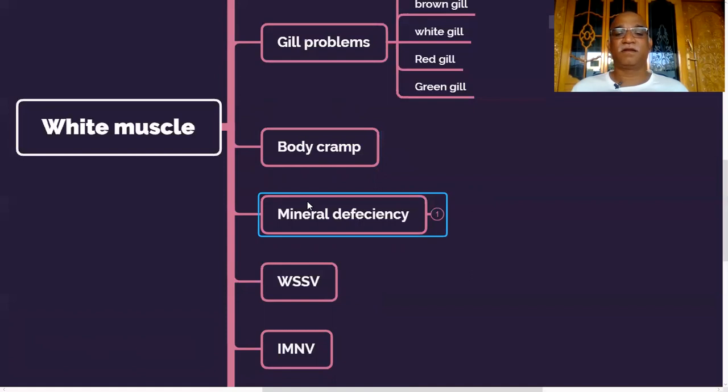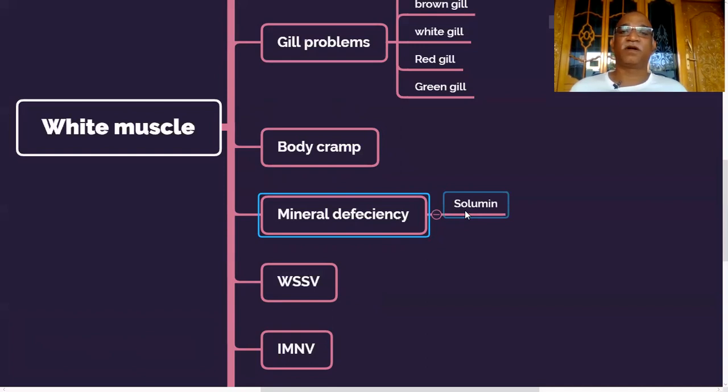So another reason for white muscle is mineral deficiency. Especially some minerals like potassium and magnesium, if they are deficient, you will find white muscle. And Solubin is our product which is 100% soluble in water.